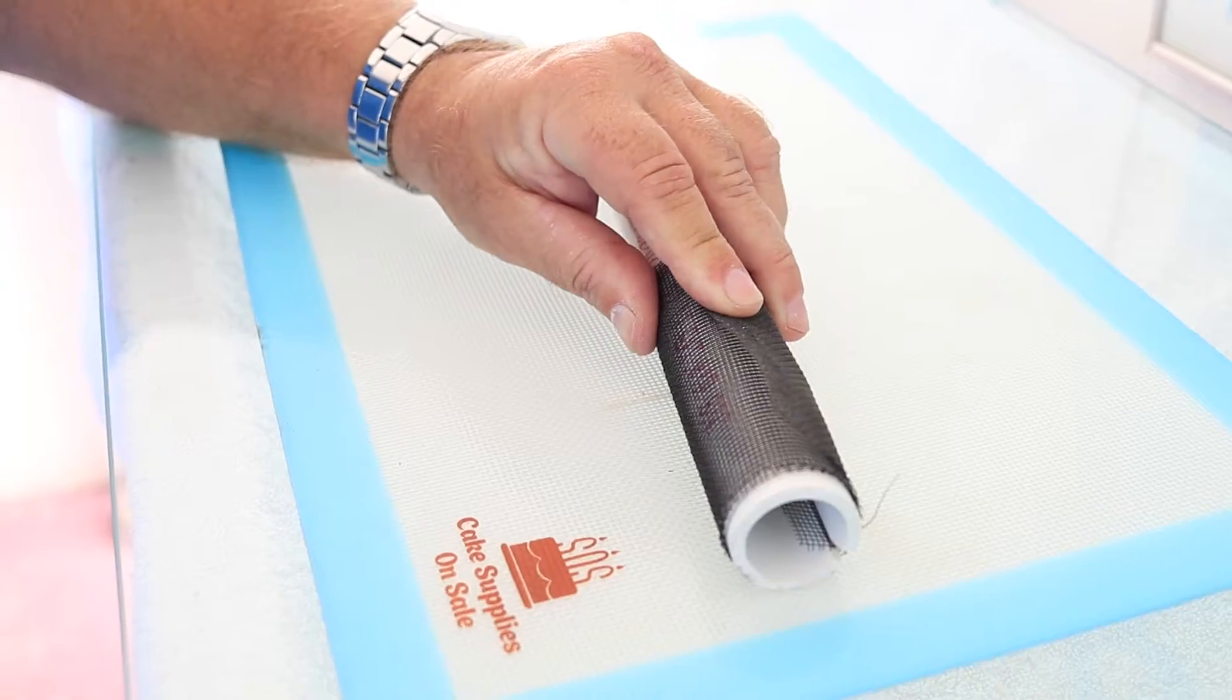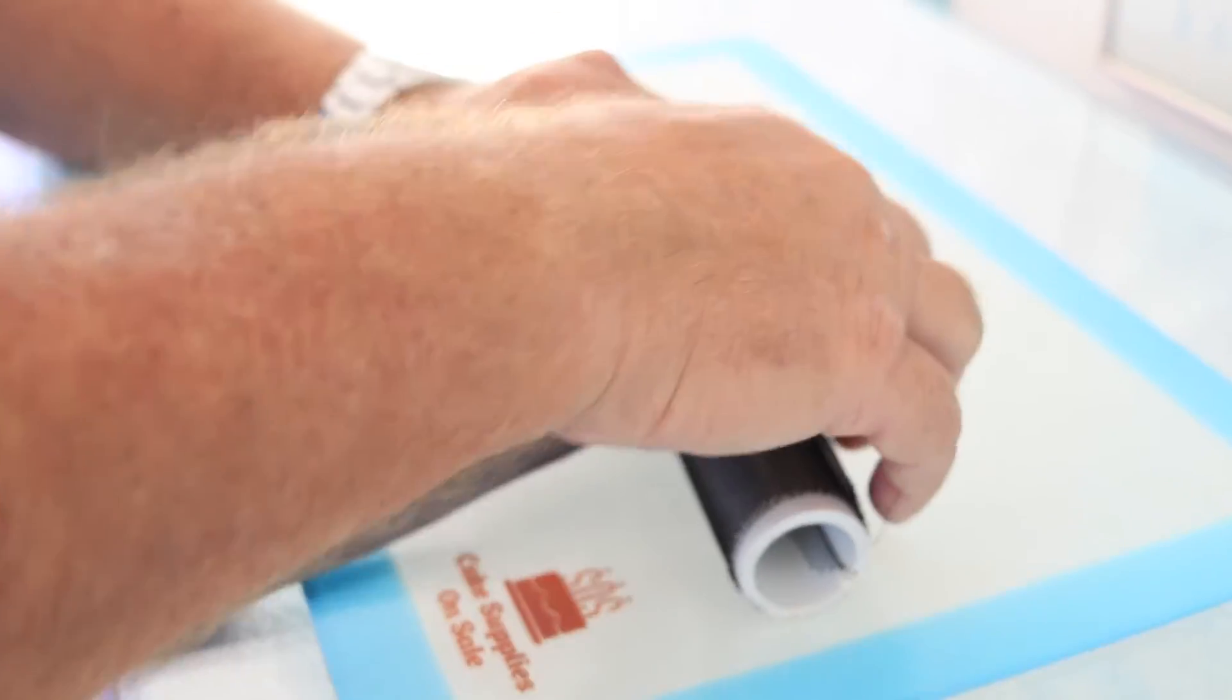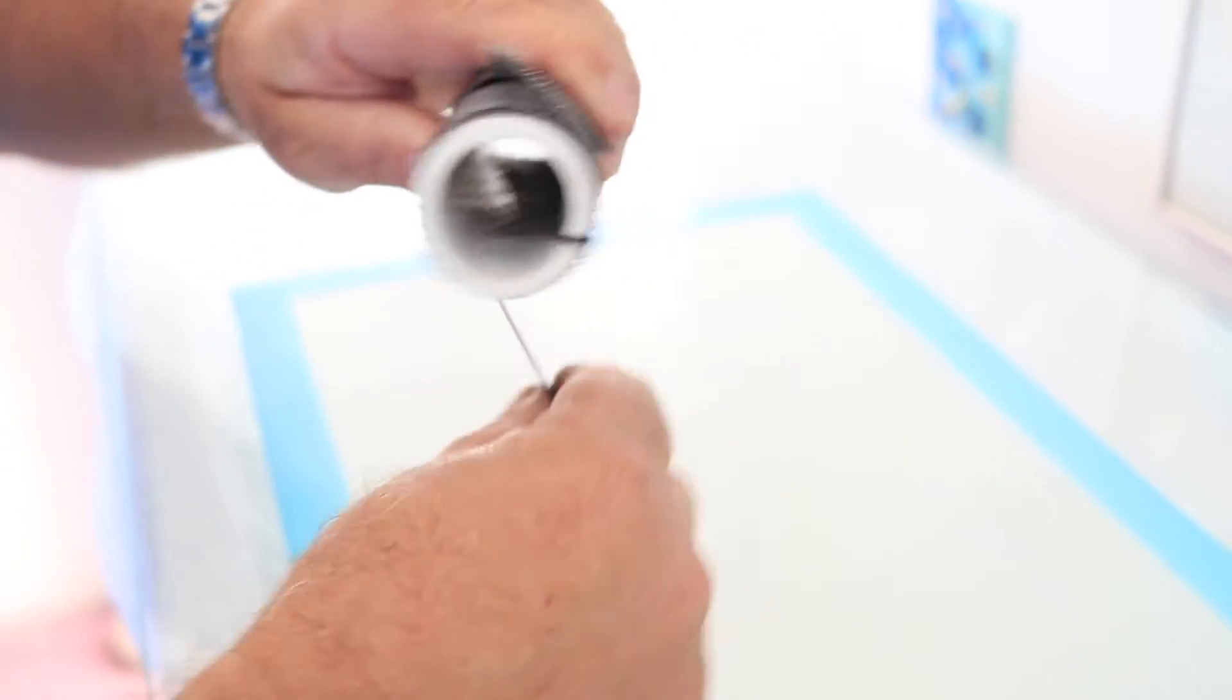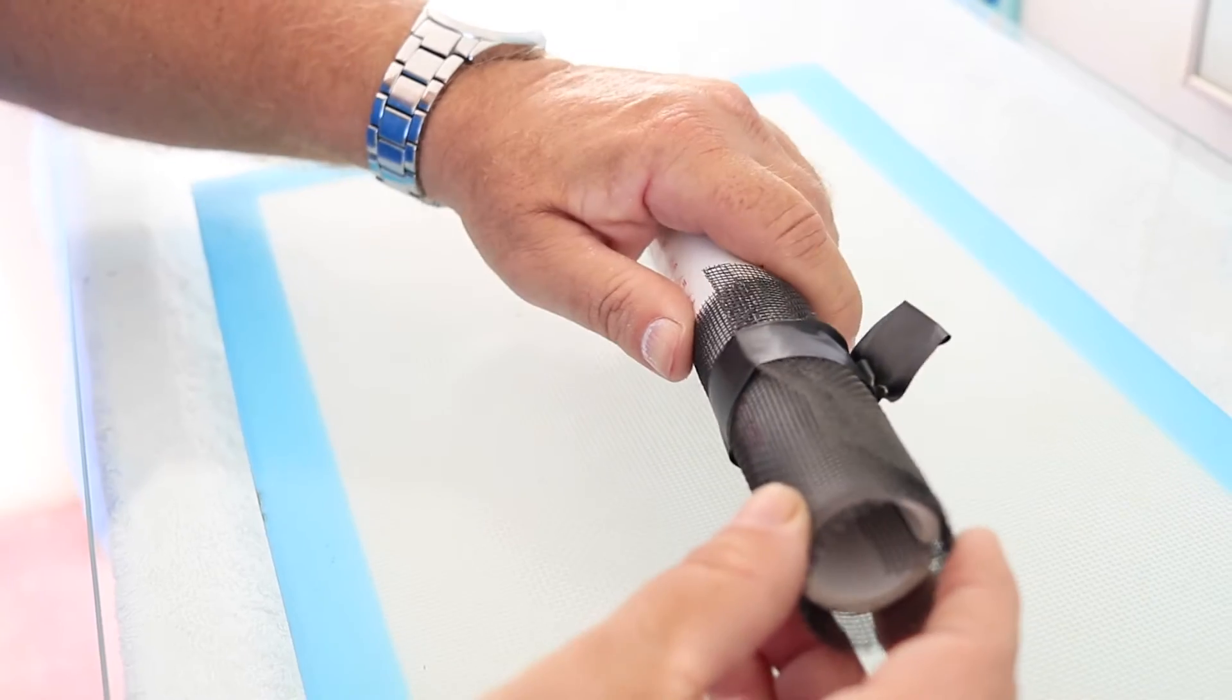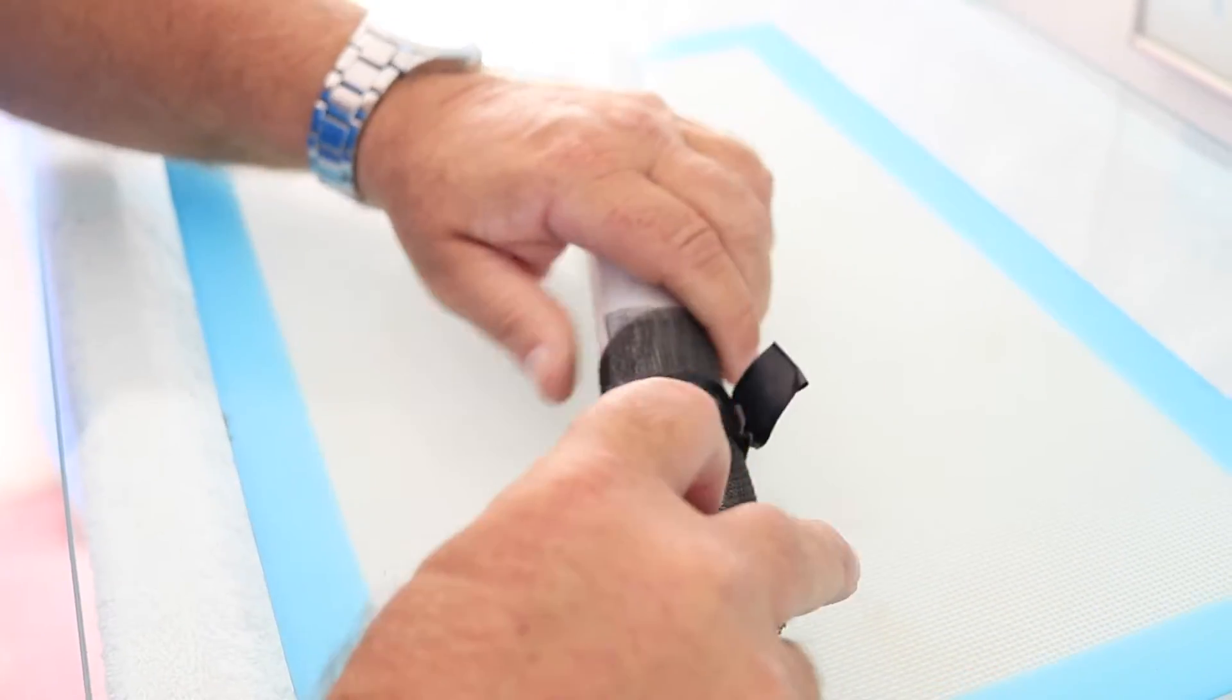Then we'll take a piece of black tape to just kind of tack it on initially to make what we're going to be doing a little bit easier to do, to hold it in place. Then we slide it off just a little bit.